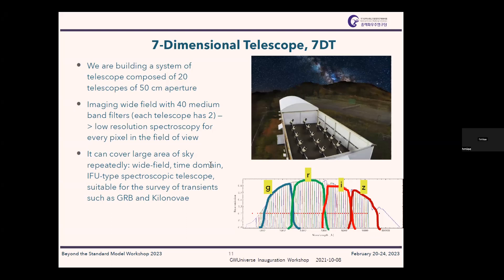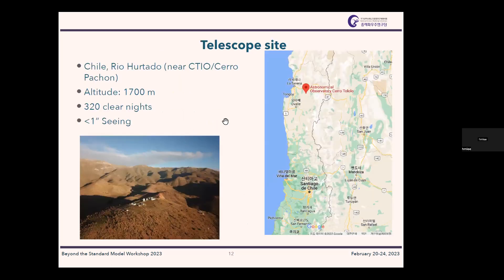This will give wide-field, time-domain, IFU-type spectroscopic information — IFU meaning integral field unit, a three-dimensional kind of spectrograph. These capabilities are very useful for the identification of gamma-ray bursts and kilonovae. The telescopes will be constructed in Chile near Cerro Tololo, at an altitude of 1700 meters, with 320 clear nights per year — close to 90% of the year — and seeing of less than half an arc second.